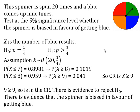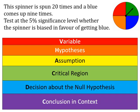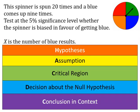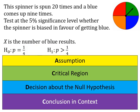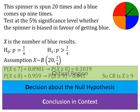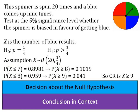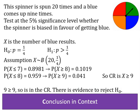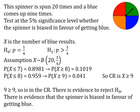Let's remind ourselves of the steps. First, write down the variable. Then write down both hypotheses. Assume the null hypothesis is true and write down the distribution. Work out the critical region using your calculator. Then look at the test statistic to decide whether to reject the null hypothesis. Finally, write the conclusion in the context of the question.